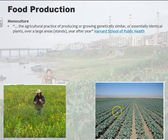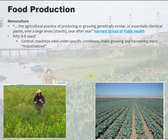Humans intervene and tend to go toward monoculture. The question is why? Basically it's all about profit. We can maximize our yield, control the conditions really specifically, and industrialize the farming — what Jeff Lawton refers to as a plant factory, often called factory farming or industrial agriculture.